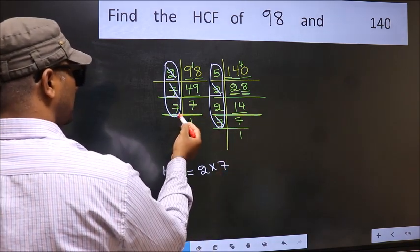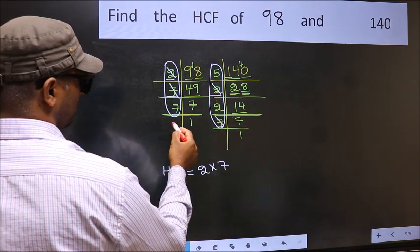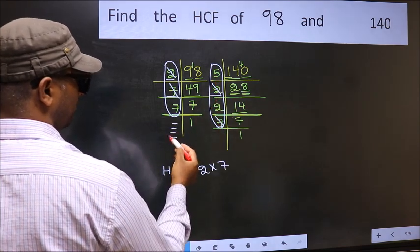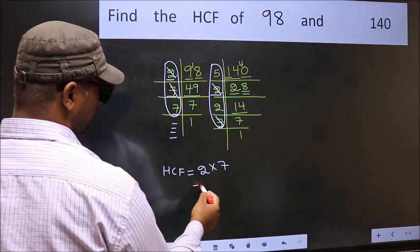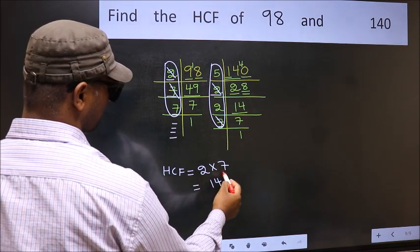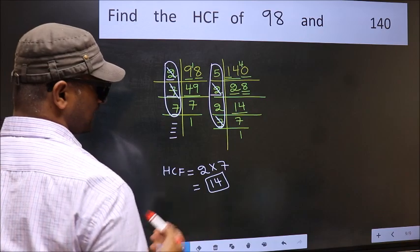Next number 7. Do we have 7 here? No. No more numbers have been left out. So our HCF is 2 into 7, 14 is our HCF.